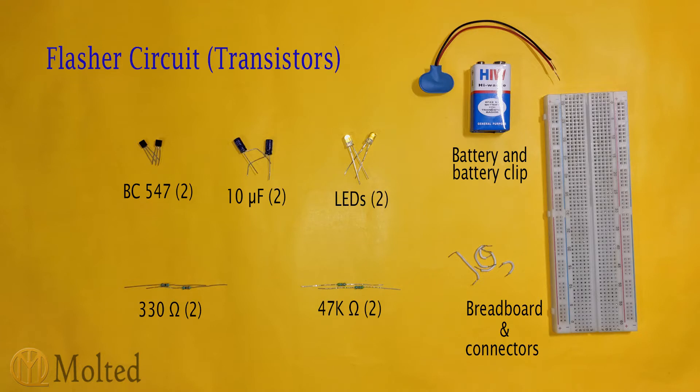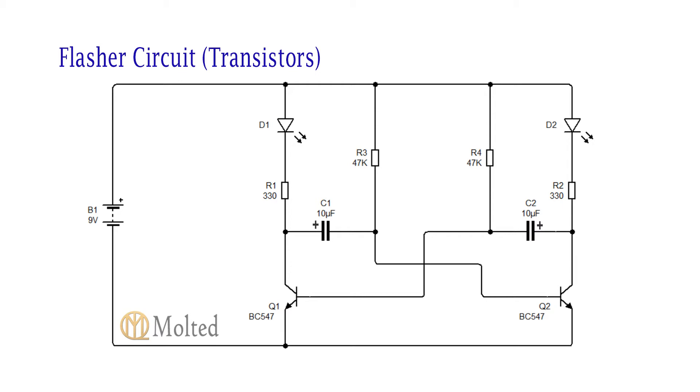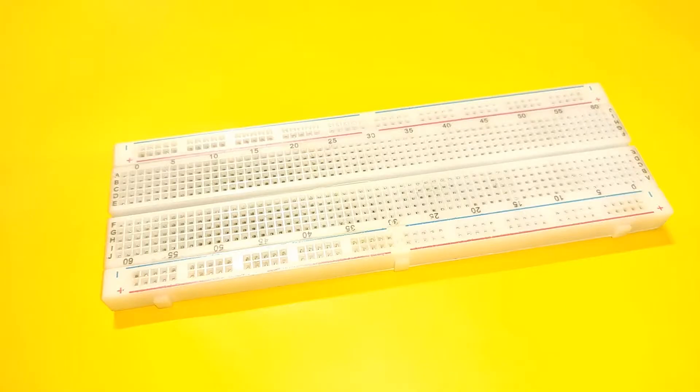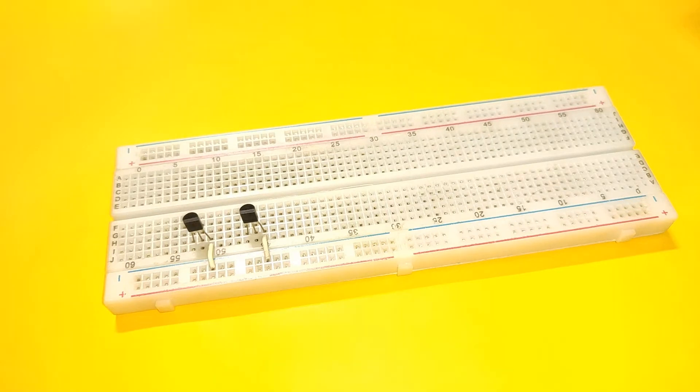These are the components required. And this is the circuit diagram. Place two PC547 transistors on the breadboard with its emitter connected to negative rail.